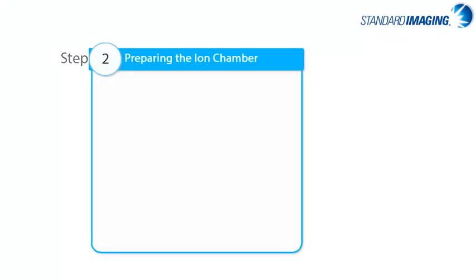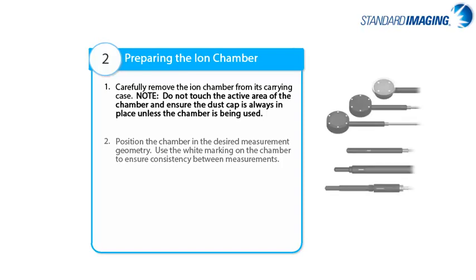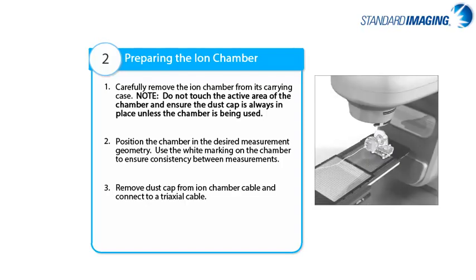Next, go into the treatment vault and set up the ion chamber. The chamber should always be handled with care, and be sure to double-check your alignment when setting the chamber up in a phantom. You can then connect the chamber cable to a prepared triaxial cable — and by prepared I mean ensure that the cable has been previously unwound such that any static buildup has been allowed to dissipate before being used. Cable coiling effects are detailed in a technical note on the Standard Imaging website and can also be found at the end of this tutorial.